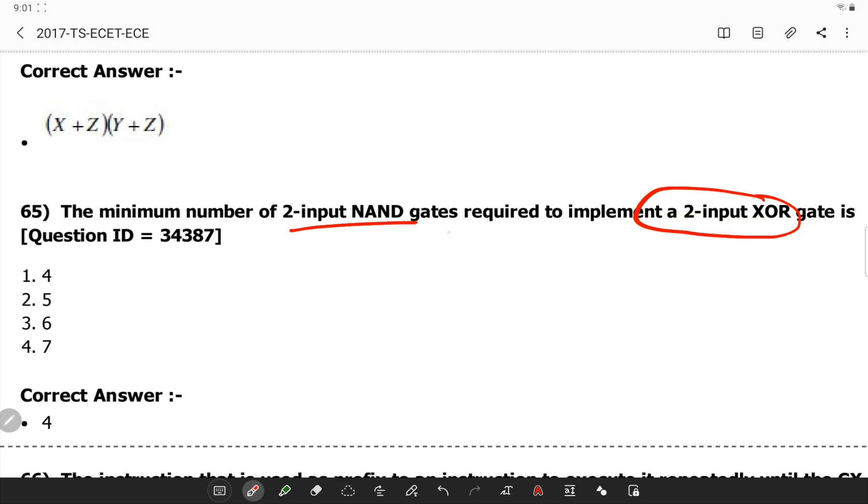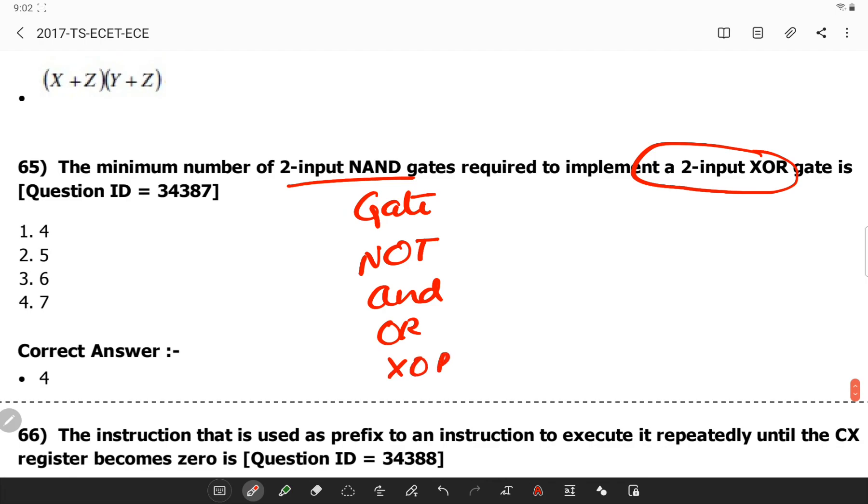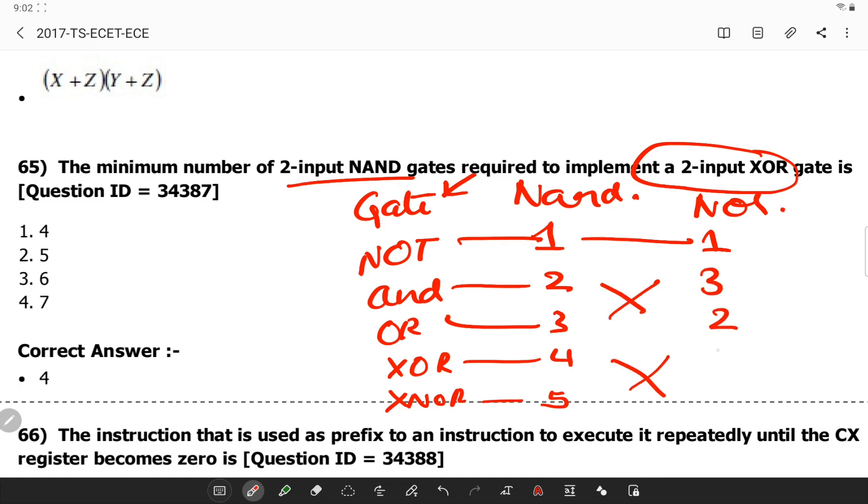The minimum number of 2 input AND gates required to implement a 2 input XOR gate. You have to remember a particular table. The table has: NOT gate, AND gate, OR gate, XOR gate, XNOR gate. If you want to implement this particular gate by NAND gates, the numbers are 1, 2, 3, 4, 5. Now if you want to implement it by NOR gate, you will need 1 NAND gate and these 2 get interchanged 3, 2 and these 2 get interchanged 5, 4.